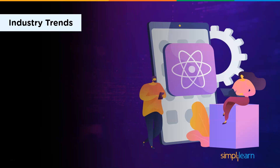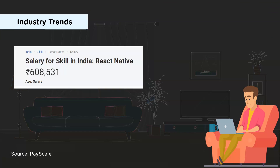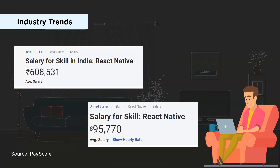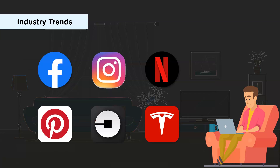Let's look at the industry trends today. The average salary of a React Native developer in India is around 6 lakh Indian rupees per annum, and in the US it is around 96,000 US dollars per annum. React Native has a higher growth trajectory compared to other frameworks and is being readily deployed by many companies. Applications like Facebook, Instagram, Netflix, Pinterest, Uber, and Uber Eats, among others, are developed using React Native.